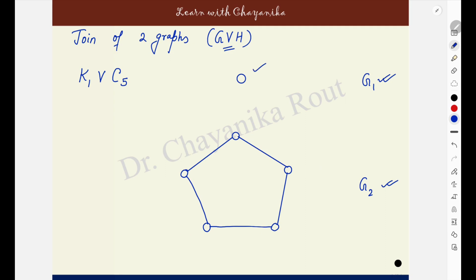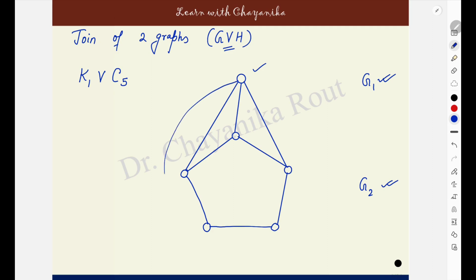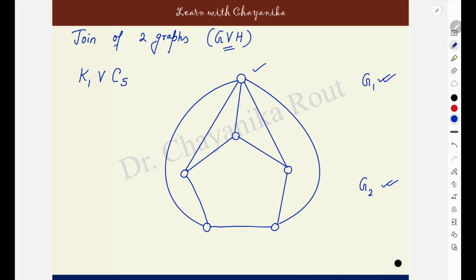This is the vertex of G1; here G1 is K1, containing only one vertex. Make it adjacent to every vertex of the other graph. Here I make the one and only vertex of K1 adjacent to all the 5 vertices of C5 — that makes my join of K1 and C5.